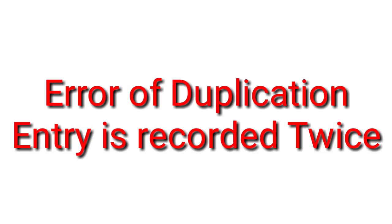The next error is the error of duplication. In an error of duplication, one entry is recorded twice in the books of accounts. Such errors do not affect the trial balance because both the debit and credit effects are passed correctly — just twice. You need to remember that duplication simply means one entry is recorded double.